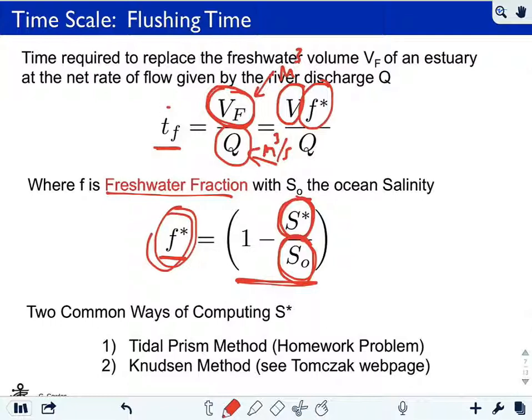Now TF, the flushing time, depended on these things. V we can compute pretty easily, fairly easily. If you have bathymetry, you can integrate that to compute V, the volume of water. Q is river discharge. You need some measure of the river discharge, how much fresh water is coming in, and so really the thing you need to get is F star, this fresh water fraction.